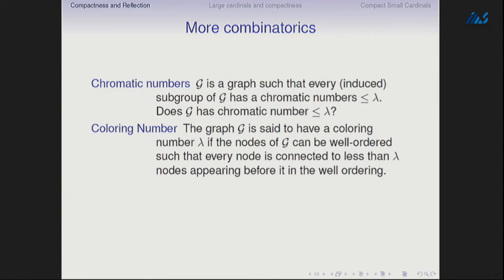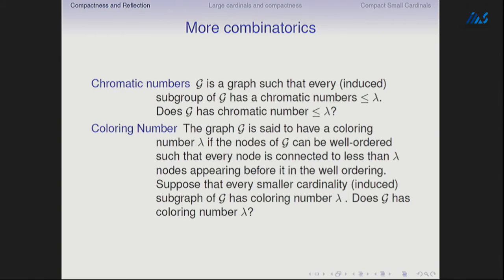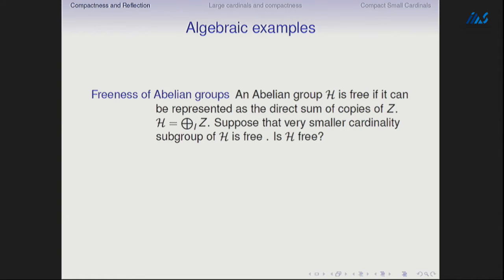I'm not hesitant to have a little bit of overlap between the talks — I don't think it's such a bad idea. So the question is: suppose that every smaller cardinality subgraph of G has coloring number λ — does G have coloring number λ?